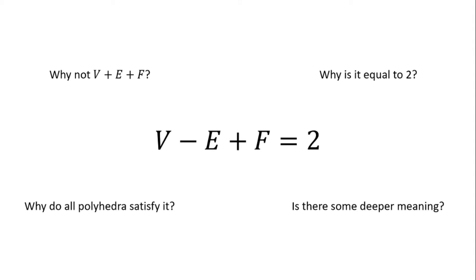But first let's test this formula on my D&D dice. For the four-sided die, the tetrahedron, there are four vertices, six edges, four faces, and four minus six plus four equals two.